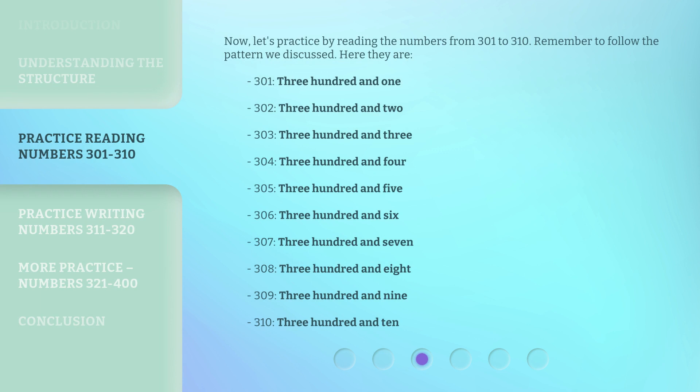Now, let's practice by reading the numbers from 301 to 310. Remember to follow the pattern we discussed. Here they are: 301, three hundred and one. 302, three hundred and two. 303, three hundred and three. 304, three hundred and four. 305, three hundred and five. 306, three hundred and six. 307, three hundred and seven. 308, three hundred and eight. 309, three hundred and nine. 310, three hundred and ten.